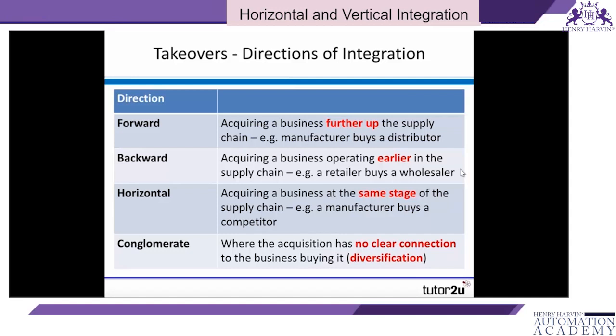There is a fourth direction of integration which won't be covered in this video — diversification — where the takeover or merger has no connection with the business's supply chain and is in an entirely different industry. It's called diversification or conglomerate integration, and will be dealt with in a separate video.